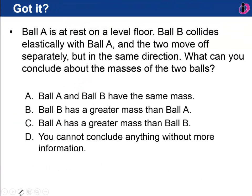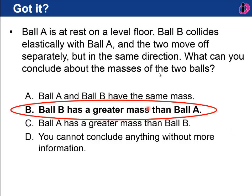Let's see if you've got it. I'll let you read through those answers, and then I'll tell you which one's correct. Press pause. So if they're moving off at the same direction, it must mean that ball b, the one that was originally moving, has greater mass than ball a. And that follows from that third equation that we just derived.